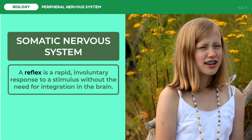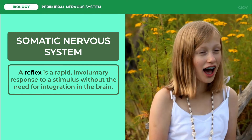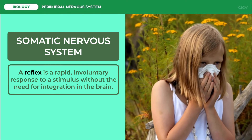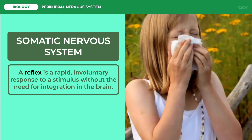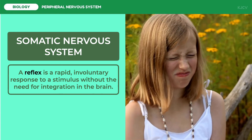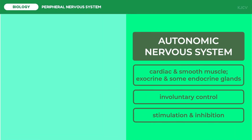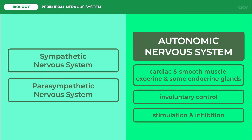Another example of a reflex is sneezing. Protective reflexes such as sneezing and coughing temporarily govern respiratory activity in an effort to expel irritant materials from respiratory passages. Now let us discuss the autonomic nervous system. Cardiac muscle, smooth muscle, most exocrine glands, some endocrine glands, and adipose tissue or fat are innervated by the autonomic nervous system — the involuntary branch of the peripheral efferent division.